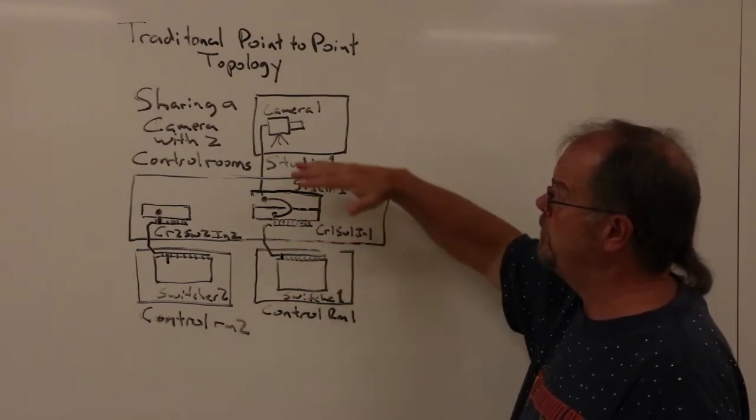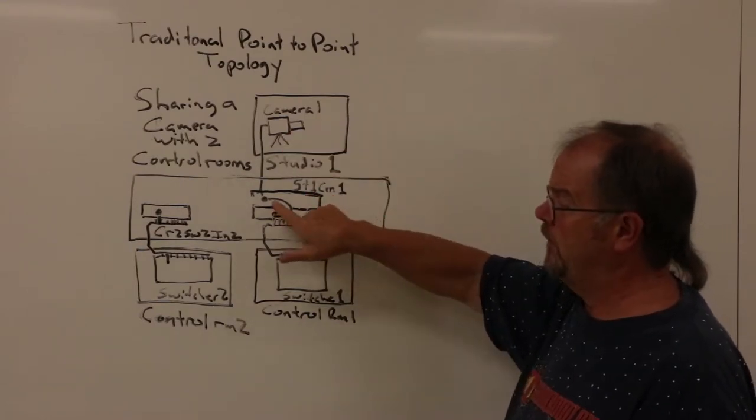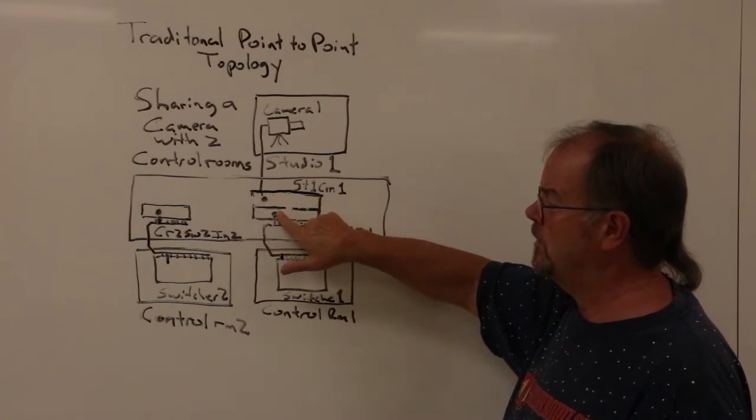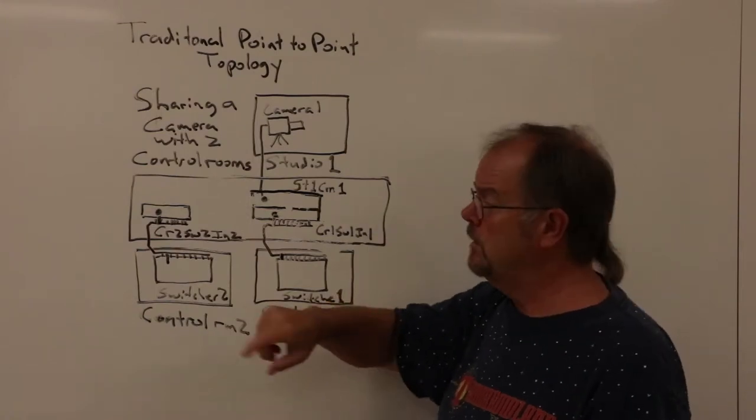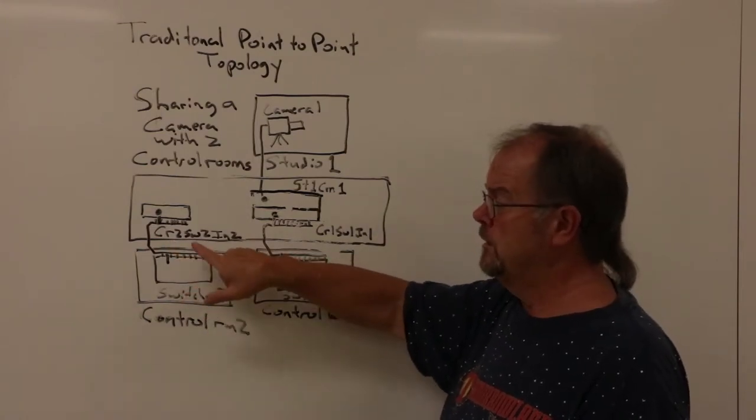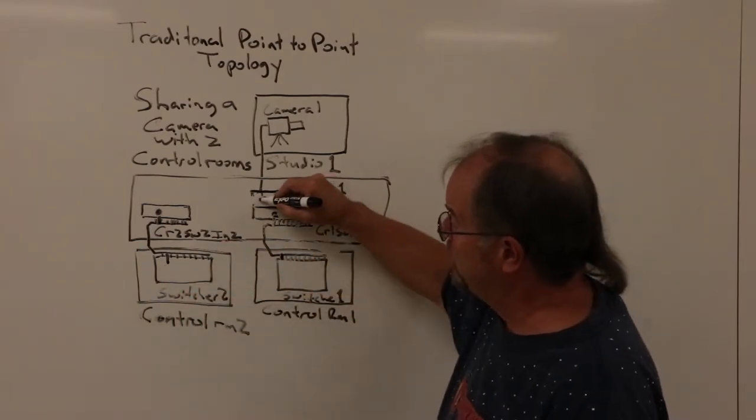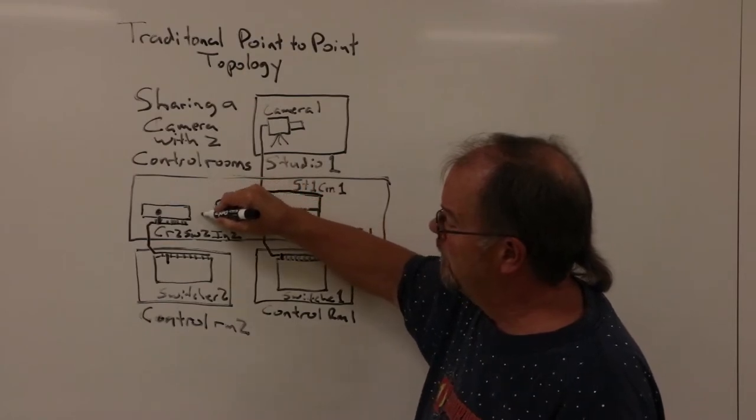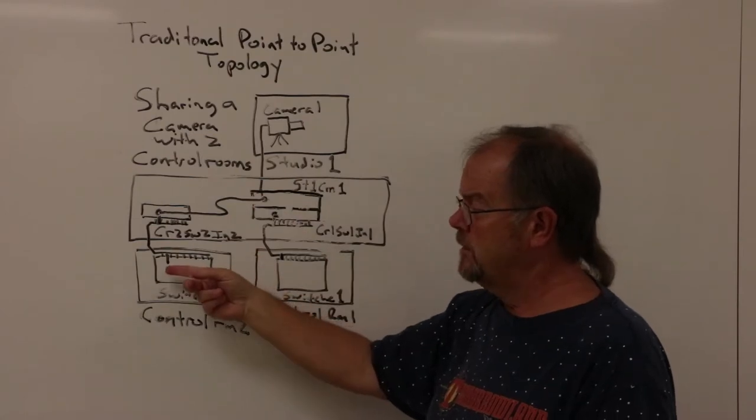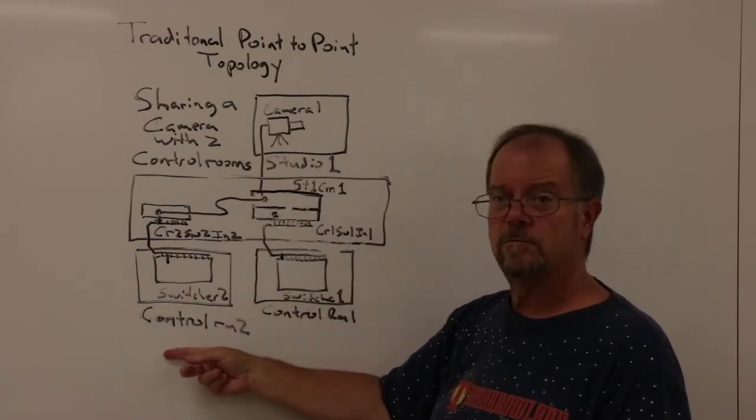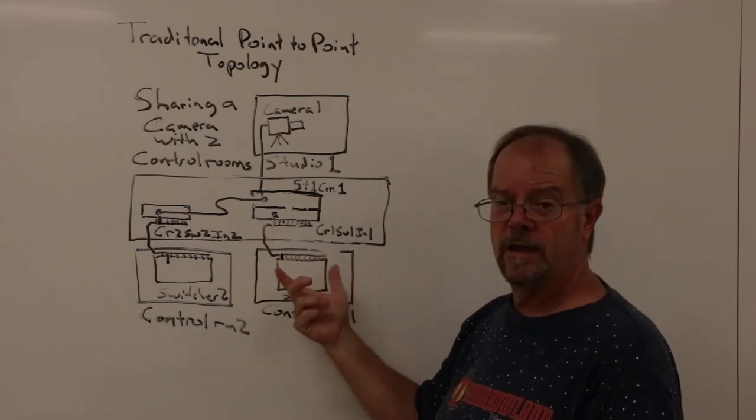In order to do this, the first thing we'd do is find the output of the camera, Studio 1 Camera 1, find that patch cord and remove it. Then we would find the input in Control Room 2 switcher 2 input 2, and simply patch a cable from one to the other. So now, Camera 1 shows up on switcher 2 in Control Room 2. The drawback of this scenario is that Control Room 1 no longer is using that camera.